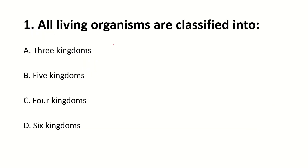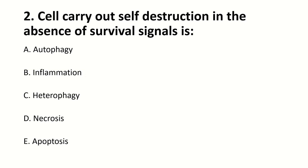All living organisms are classified into how many kingdoms? The right answer is five kingdoms. Cells carry out cell restrictions in the absence of survival signals. The right answer is E.